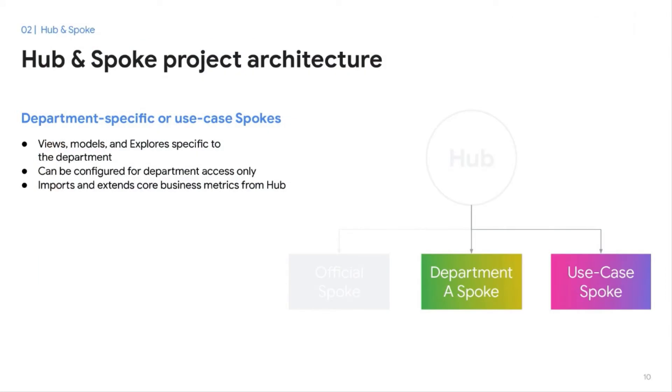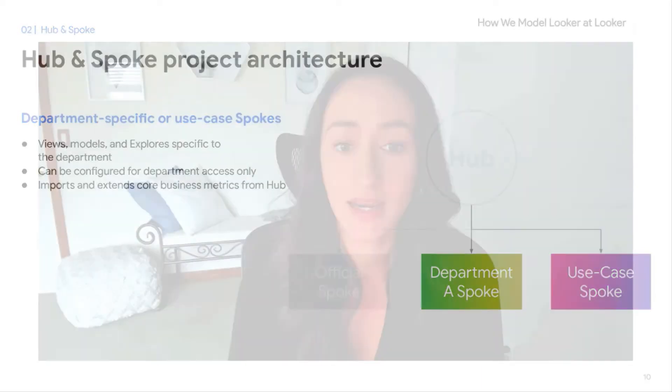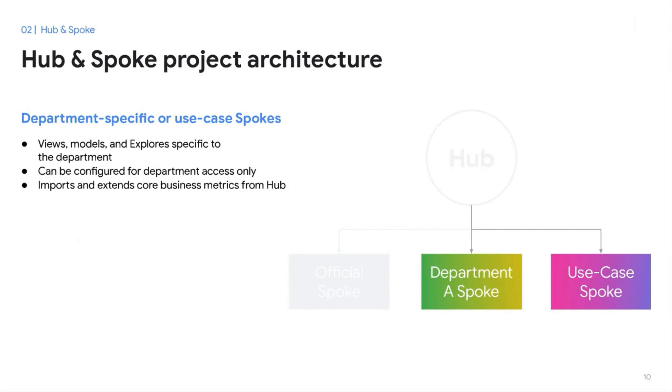The other spokes or projects in the architecture are either department-specific or use case-specific spokes. The department-specific spoke is exactly what it sounds like — a project dedicated to a single department or organization. An example is the customer success spoke, which might have information on support tickets that only the customer success team can access. The use case-specific spokes can also be configured so that only a subset of users can access. These spokes are useful for cases where a single use case spans various departments but doesn't necessarily include metrics used company-wide. Instead of having duplicate explores for each department, we can have a single use case spoke accessible across various teams.